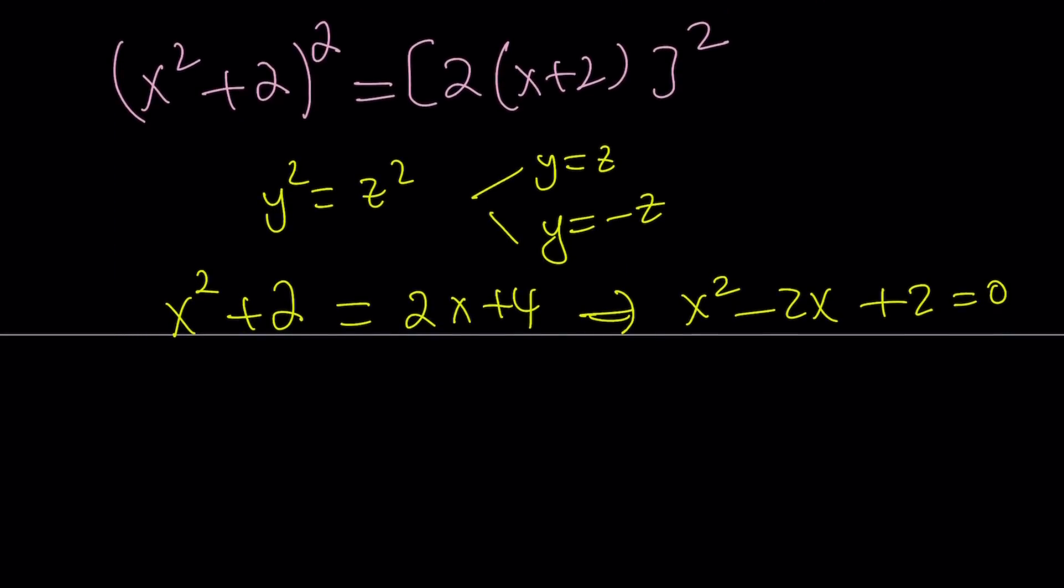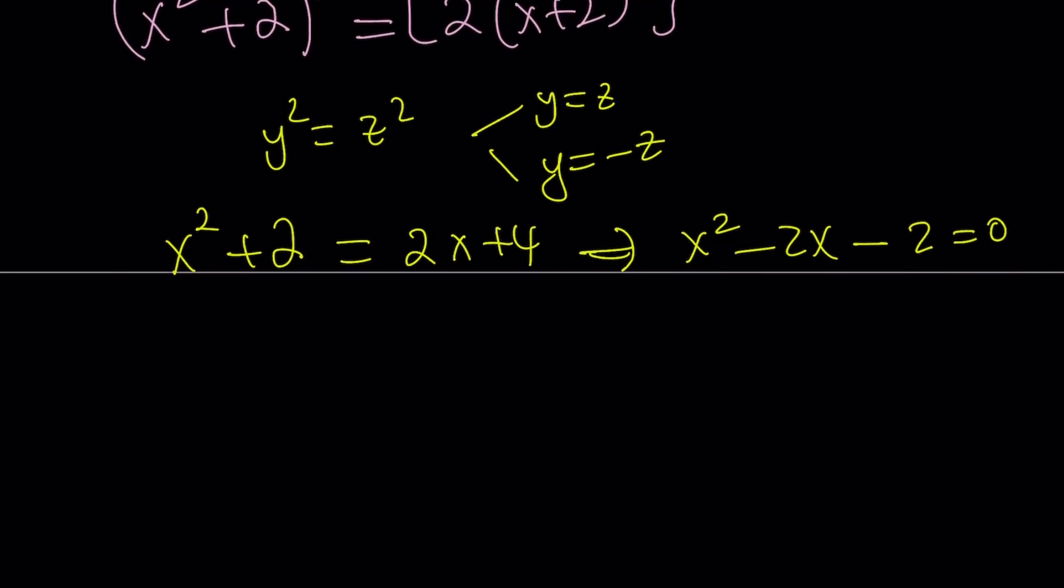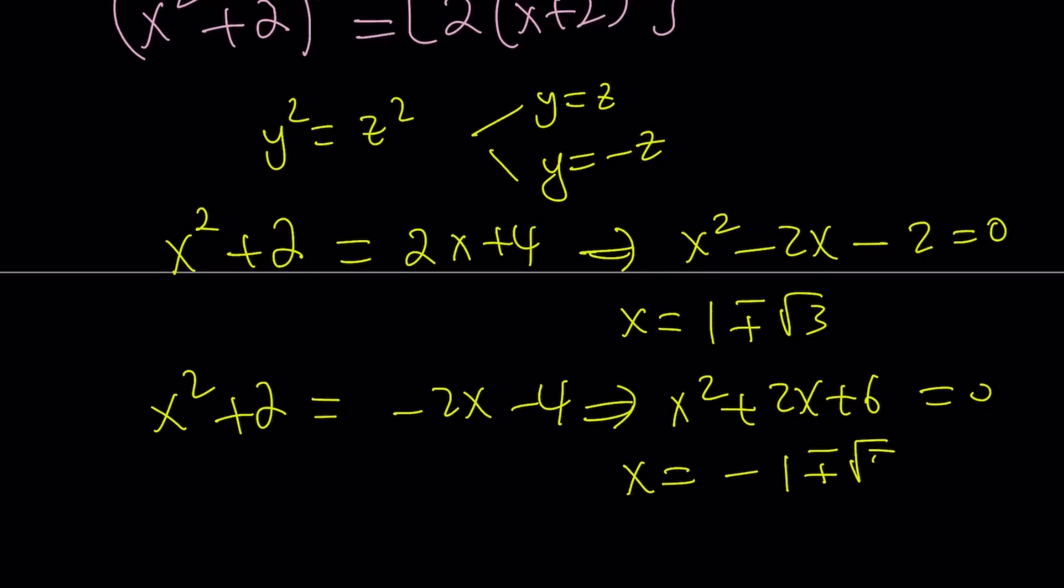It's supposed to be minus 2. So x squared minus 2x minus 2, and obviously this is going to give you the solutions 1 plus minus root 3 for x. And the other equation comes from negating the right-hand side, which is negative 2x minus 4. And from here, you get x squared plus 2x plus 6 equals 0, and this is the one that has the complex solutions. They are going to be negative 1 plus minus root 5i. So these are going to be the solutions, and this brings us to the end of this video.